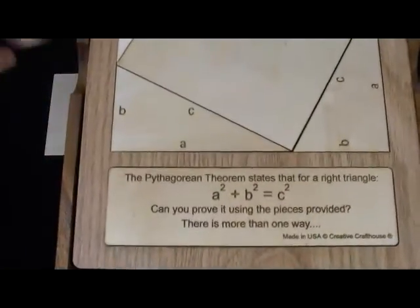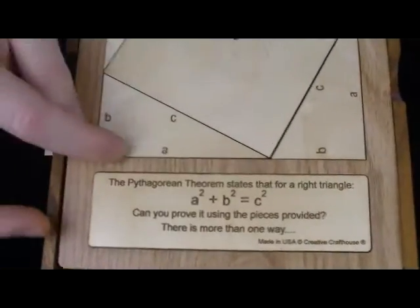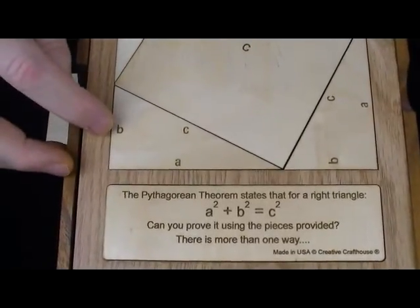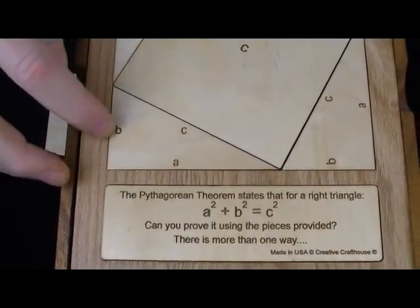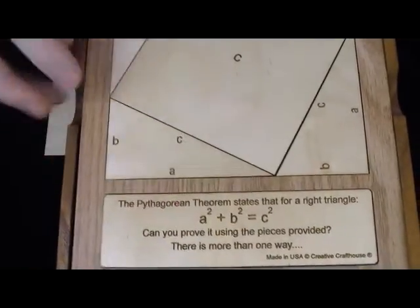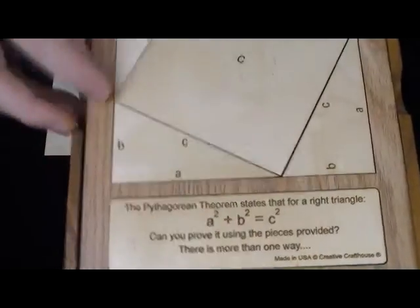Well, the Pythagorean Theorem states that given any right triangle, a right triangle has a 90-degree corner, that b squared plus a squared equals c squared, where c is called the hypotenuse. It's the longest leg of the triangle.